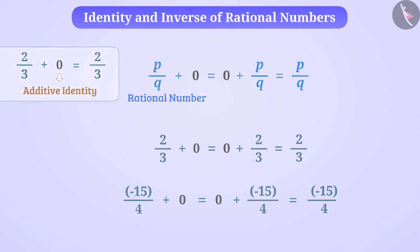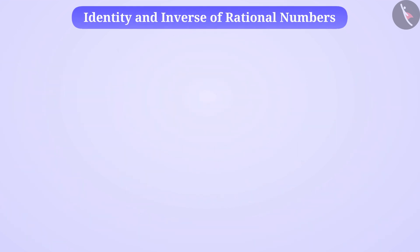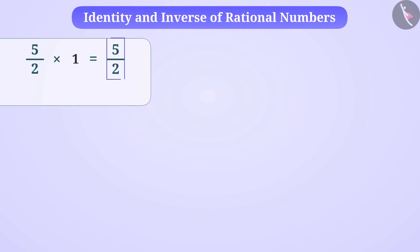Similarly, in all rational numbers, 1 is the only number which if multiplied to any rational number gives the same rational number. The identity of that rational number does not change. We say that 1 is the multiplicative identity for rational numbers.